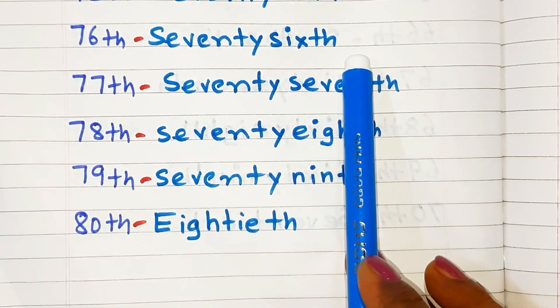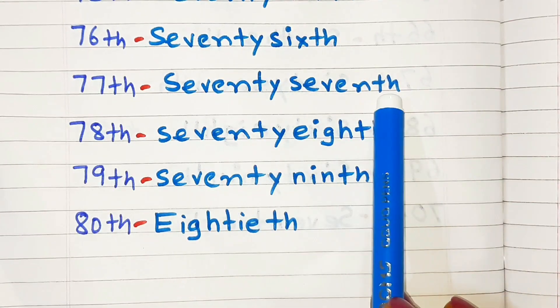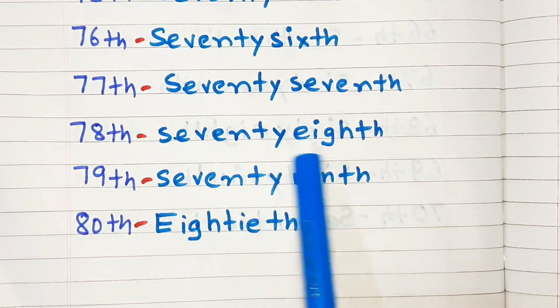Ordinal Numbers Seventy-one to Eighty: Seventy-first, Seventy-second, Seventy-third, Seventy-fourth, Seventy-fifth, Seventy-sixth, Seventy-seventh, Seventy-eighth, Seventy-ninth, Eightieth.